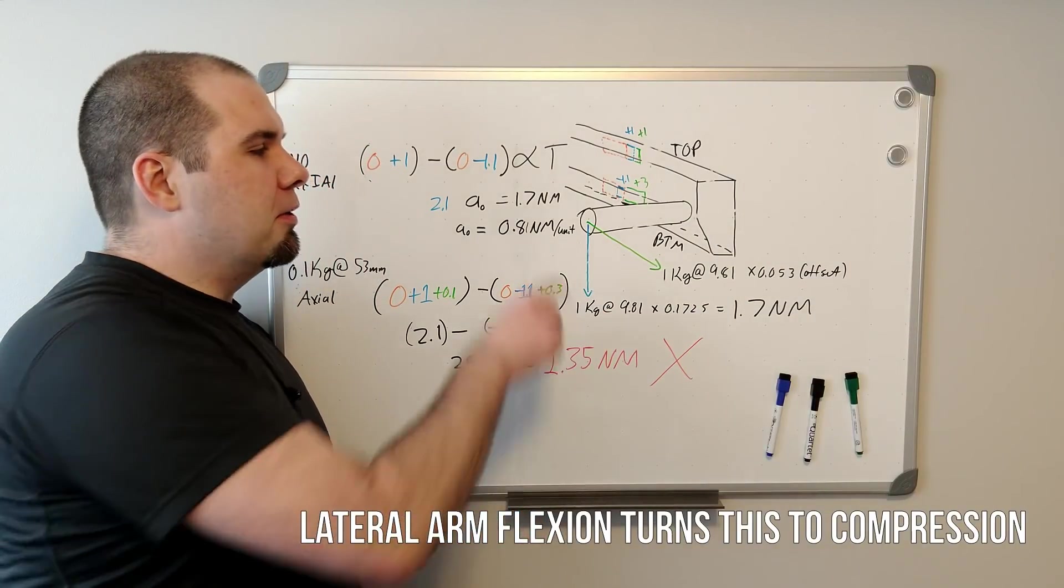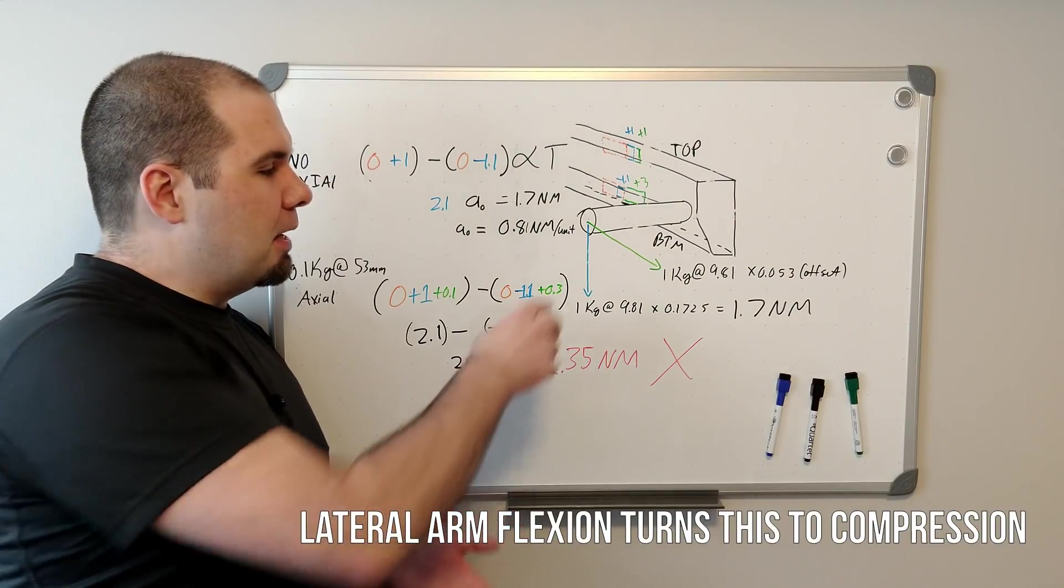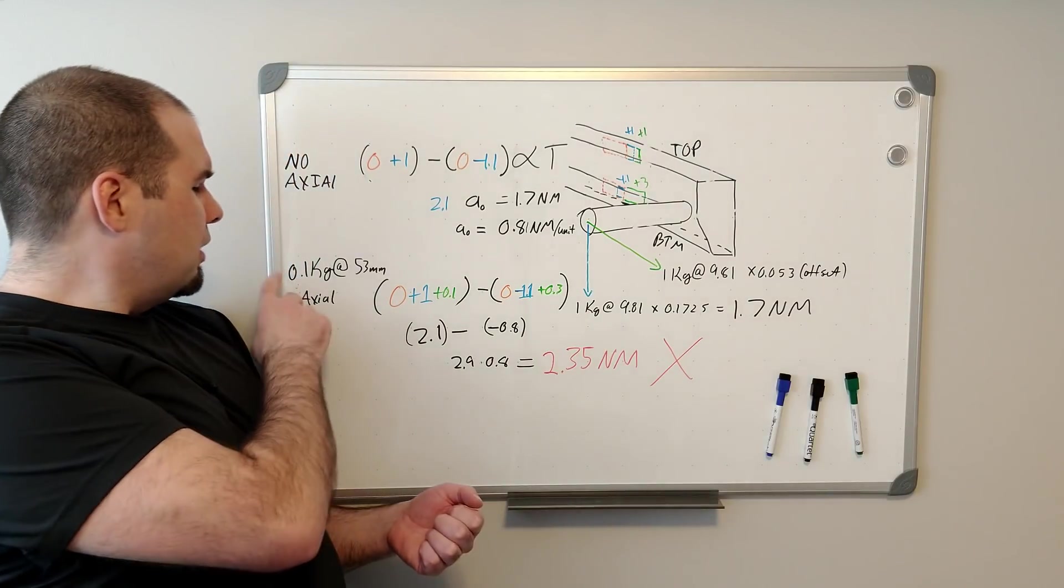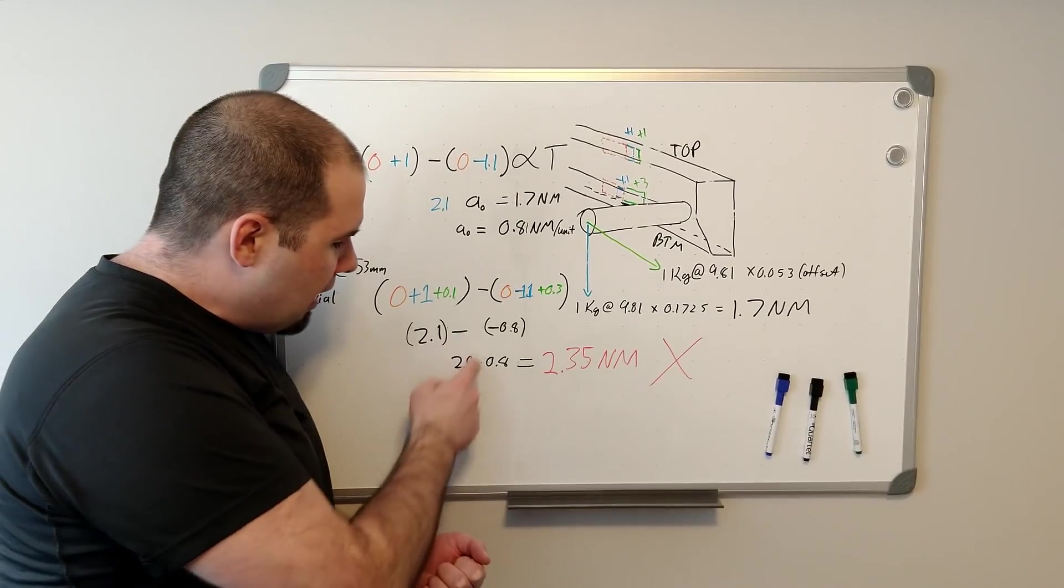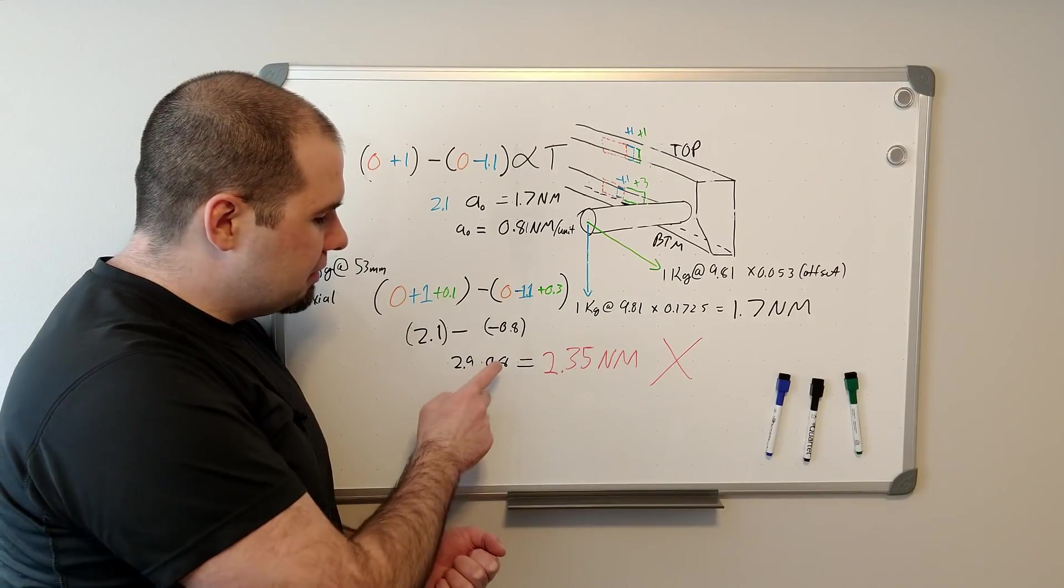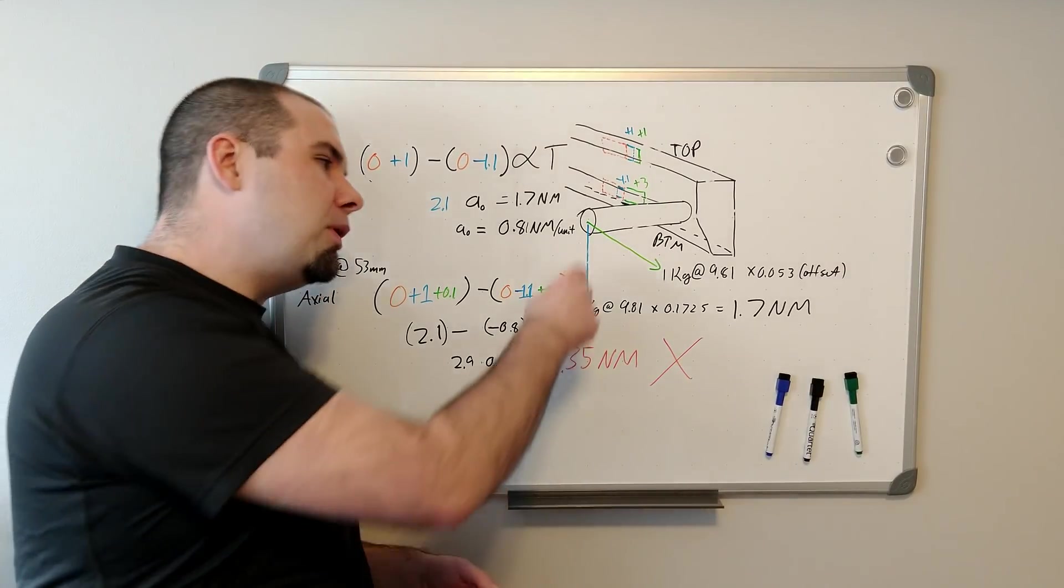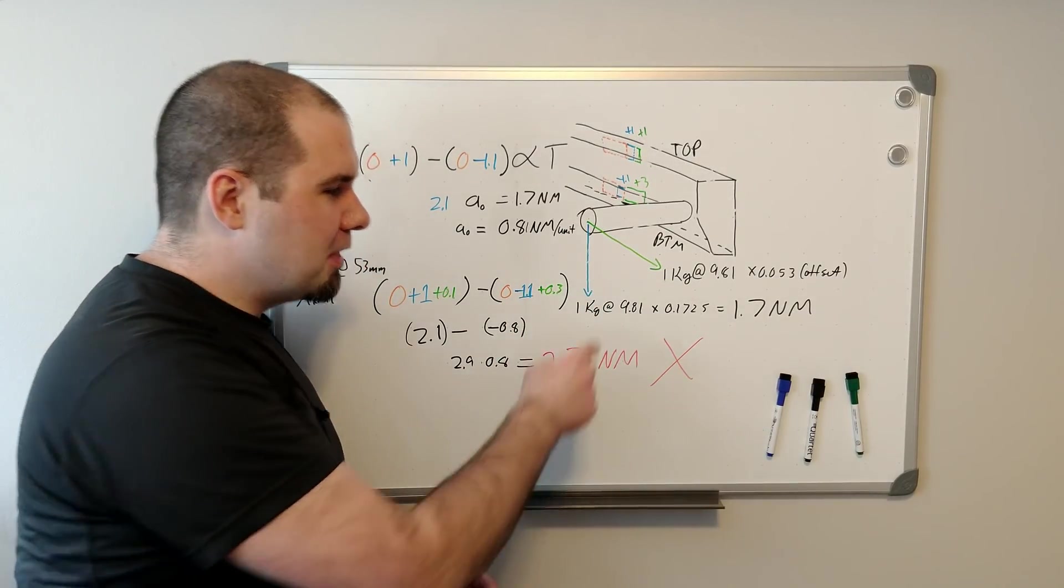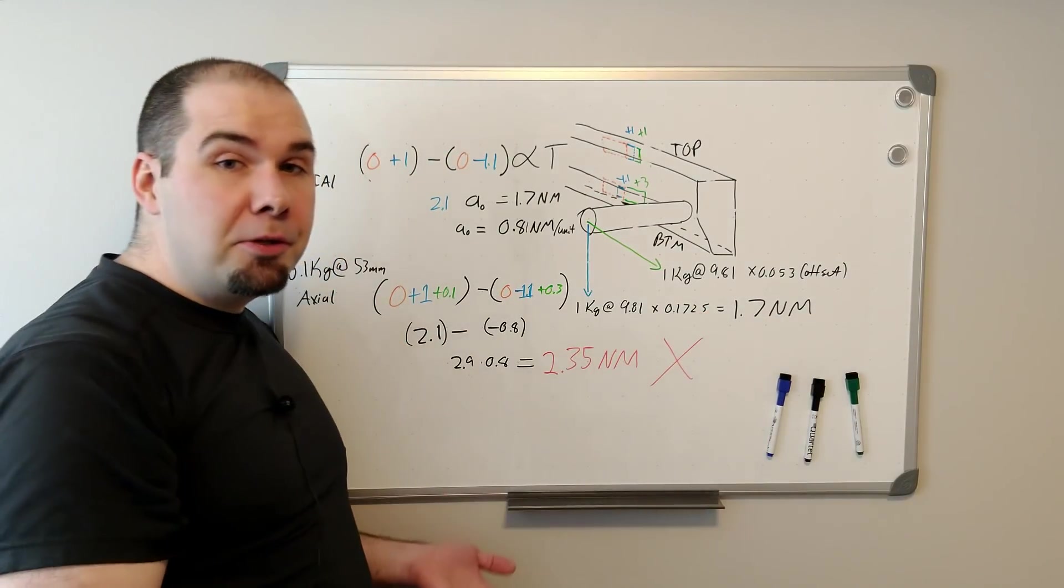But in a real cycling scenario, your axial force isn't usually in the same league as the amount of force you're applying through the rotation. So if we use 0.1 of a kilo, and we run through all the math, what the power meter is going to see is 2.9. We multiply that by our calibration factor, we get 2.35 Newton meters. But we know that we're only applying 1 kilo of force at this distance, so we should be reading 1.7. And that's a huge difference.